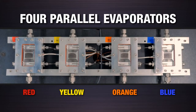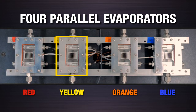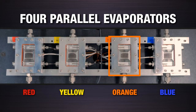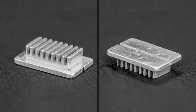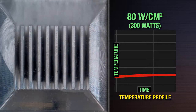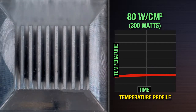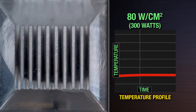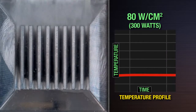Here we see four parallel evaporators, each identified with a specific color, and each with the capability of dissipating different heat loads. Evaporator one is red, two is yellow, three is orange, and four is blue. Here is a sample of one of the evaporators — the hot device is attached on one side, and the fins, which are viewable in the demo unit, are on the other. Under steady state conditions of applying 300 watts to each evaporator at a heat flux of 80 watts per centimeter squared, we can see the incoming liquid begin to boil as it moves across the hot evaporator.